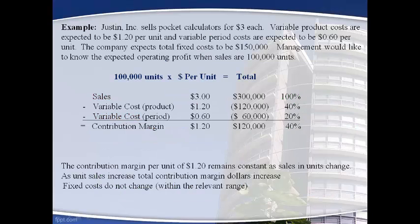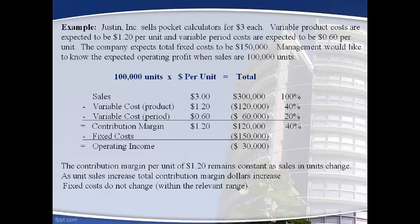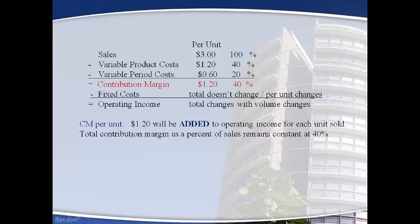Let's take a look at an example of a company that sells calculators for $3 each. The variable production costs are $1.20 and $0.60 per calculator is required to sell the calculator, regardless of how many units are sold. $1.20 will be added to operating income for each calculator that is sold. $0.40 of every sales dollar will be added to operating income when another dollar is sold. Contribution margin is not profits until fixed costs are covered. Total fixed costs of $150,000 will not change when the number of units sold changes. Selling 100,000 calculators does not give enough contribution margin to cover fixed costs.